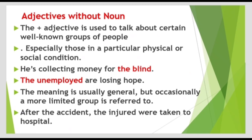The adjective is used to talk about a certain well-known group of people. There are some adjectives that describe well-known groups of people, especially those in a particular physical or social condition. For example, 'He is collecting money for the blind.' Here the word 'blind' shows the group of people, so 'the blind' is used here as a noun.